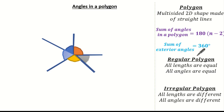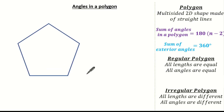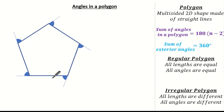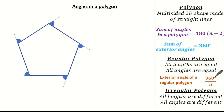Now let's extend this fact using our knowledge on regular polygons. If we have a regular polygon where all the lengths are equal and all the angles are equal, and we know all the exterior angles sum to 360 degrees, we can quickly work out the exterior angle of any regular polygon. It is simply 360 divided by the number of sides — this will always give us the exterior angle of any regular polygon.